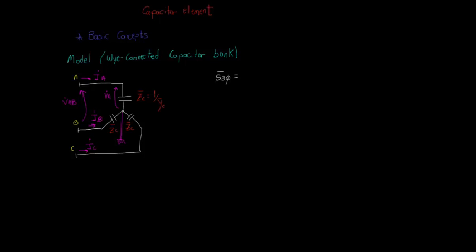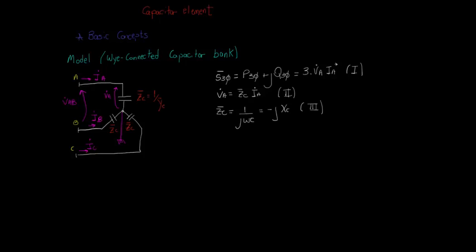We know that the three-phase complex power consumed can be broken into a three-phase active power and a three-phase reactive power. Assuming that the system is symmetric and balanced, the complex power consumed by each branch is the same. Then, we can say that the three-phase power is equal to 3 times Va times Ia conjugated. We also know that Va is equal to Zc times Ia, and that Zc is equal to 1 over J omega C, which can be written as minus J times a reactance Xc. From equations 1 and 2, we can say that the three-phase complex power is equal to 3 times Va squared over Zc conjugated.